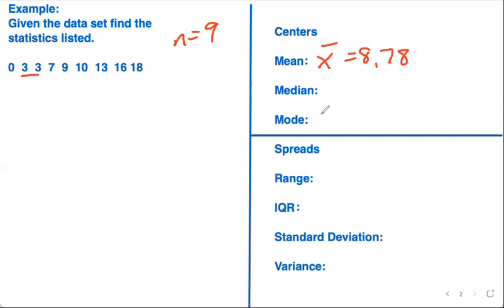The median, I would use the equation n plus one over two to find the position. So nine plus one divided by two tells me the fifth position.